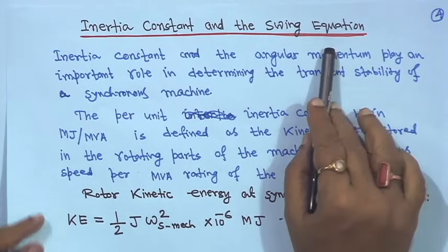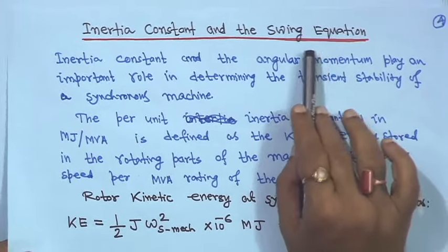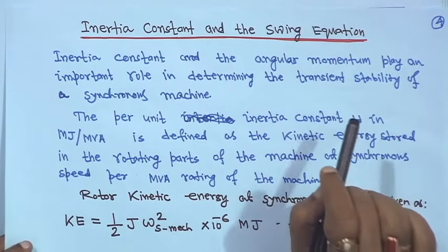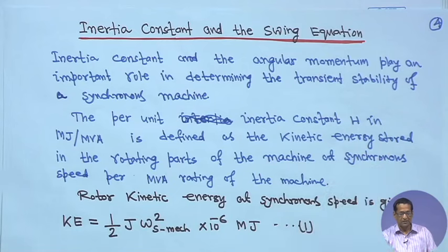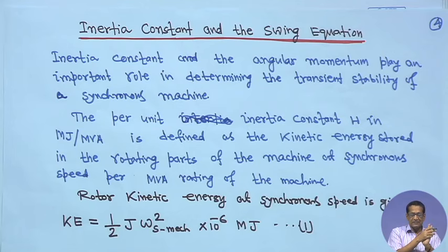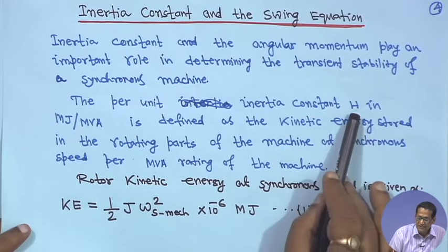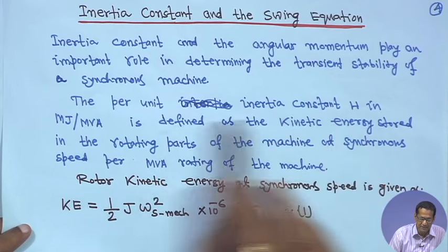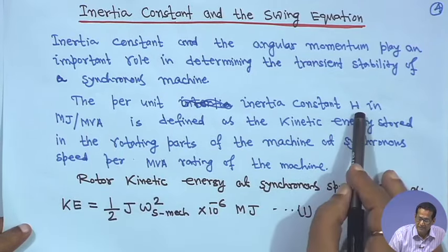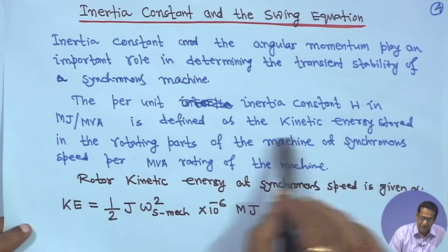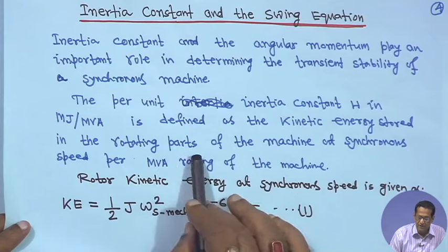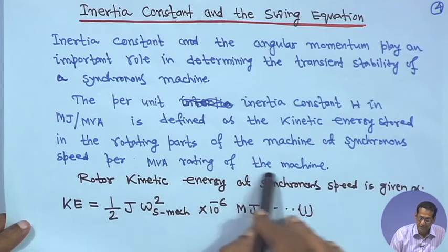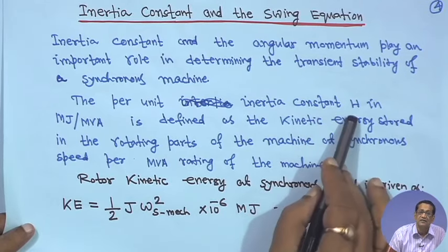Now we move to inertia constant and the swing equation. The swing equation describes the dynamics of the rotor of a synchronous machine. The inertia constant and the angular momentum play an important role in determining the transient stability of a synchronous machine. The per unit inertia constant H — its dimension is mega joule per MVA, or it can be given a unit in seconds. It is defined as the kinetic energy stored in the rotating parts of the machine at synchronous speed per MVA rating of the machine.